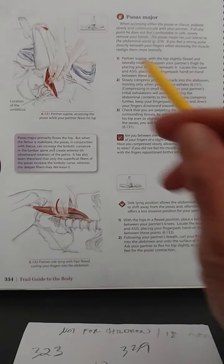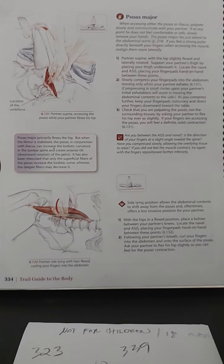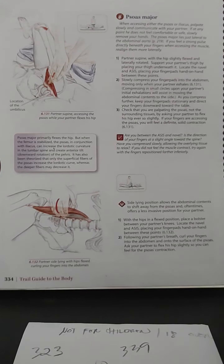Looking at the image, ask yourself these questions: Are you between the ASIS and navel? Is the direction of your fingers at a slight angle toward the spine? Have you compressed slowly, allowing the overlying tissue to relax? If you did not feel the muscle contract, try again with the fingers repositioned further and slightly farther in.